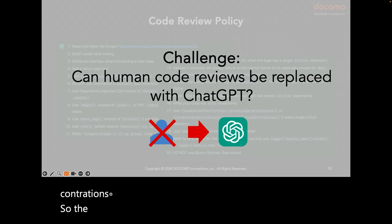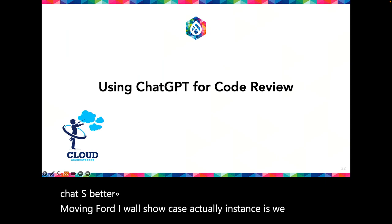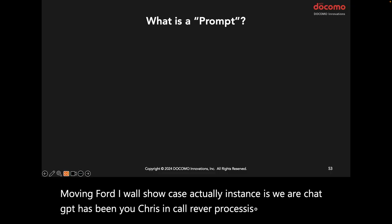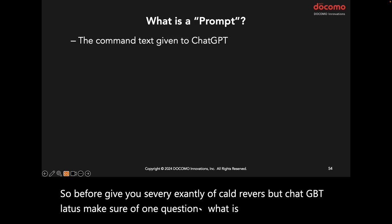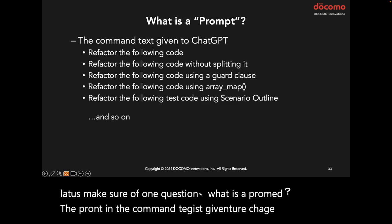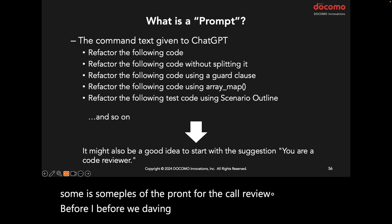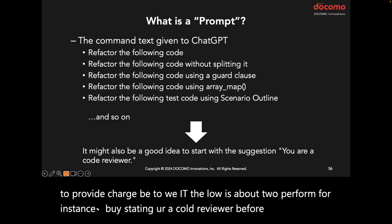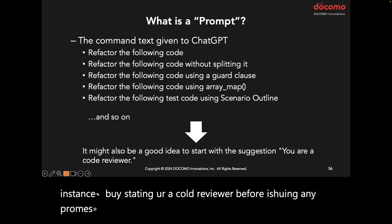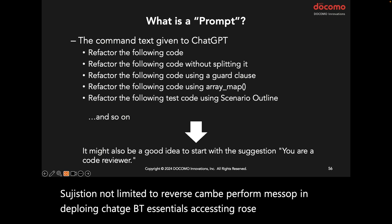The challenge is: we want to replace human code review with ChatGPT. Moving forward, I will showcase actual instances where ChatGPT has been utilized in code review processes. Before diving into examples, let's clarify what a prompt is. The prompt is the command text given to ChatGPT. Before issuing any prompts, it's wise to provide ChatGPT with the role it's about to perform — for instance, stating 'you are a code reviewer.' This kind of role assignment is a powerful method for deploying ChatGPT, essentially priming the AI to enhance its performance.